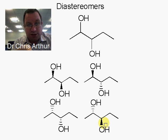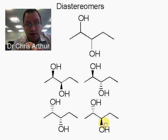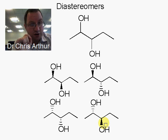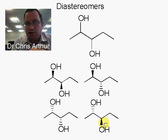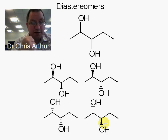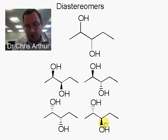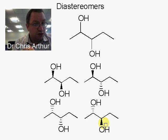These are not enantiomers of one another. They share the same sort of chiral centre, but they are not enantiomers — they are instead diastereomers. This is an important difference, and it particularly comes up in sugars, where sugars often have different arrangements of hydroxyl groups around them, and you get different diastereomers of the sugars.